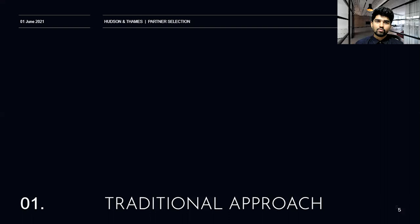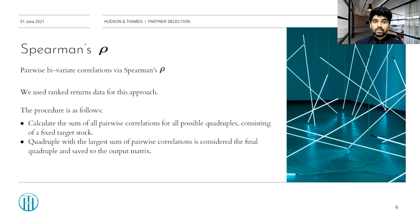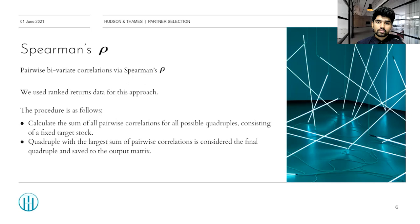Let's get into the traditional approach. The traditional approach is a pretty basic baseline approach and it is based on Spearman's rho. One thing to note is that all measures of association we'll be looking at are calculated using the ranks of daily returns. Ranked transformations are preferred as copulas deal primarily with ranked statistics, and ranked data provides robustness against outliers since we only consider the relative position of outliers in the ordered sample. In the traditional approach, we calculate the sum of all pairwise correlations for all stocks in the quadruple — that is six unique pairs for four stocks. We calculate Spearman's rho for each pair, sum them all together, and return the quadruple which maximizes this sum.